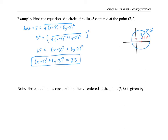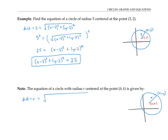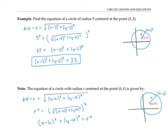This same reasoning can be used to find the general equation of a circle with radius r centered at the point h, k. For any point x, y on the circle, the distance between the point x, y and the center h, k is equal to the radius r. So the distance r is equal to the square root of the difference between the x coordinates, x minus h squared, plus the difference in the y coordinates, y minus k squared. Squaring both sides and rearranging gives us x minus h squared plus y minus k squared equals r squared. That's the general equation for a circle of radius r and center at the point h, k.